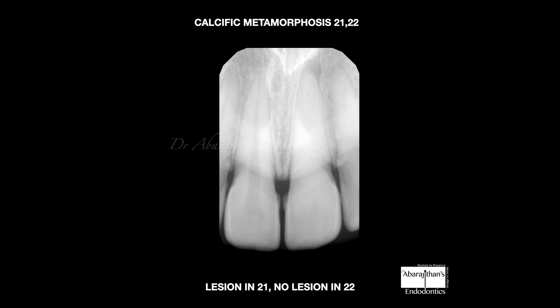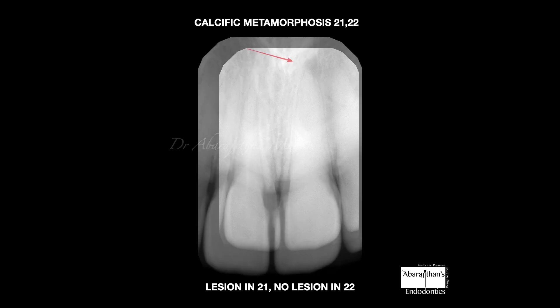So I don't need CBCT here — I know there is a canal which I need to carefully trace, but the canal originates only from almost the middle third. In these cases we need magnification and slowly drill until we reach the patent canal. The canal is always there. Whereas in the lateral incisor, even with magnification or CBCT guidance, we are not going to find any canals at all.